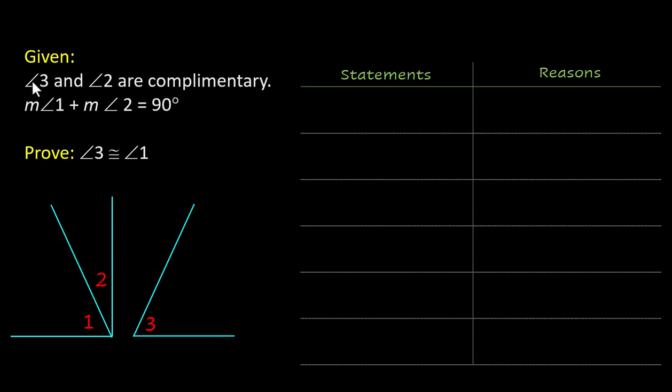So we start with what we're given. Angle 3 and angle 2 are complementary and we know that means that when you add those two together they would equal 90 degrees. They don't have to be right next to each other, we just know that whatever they are they would be 90 if we added them up.